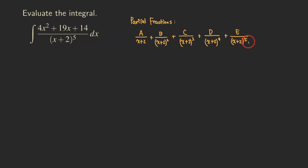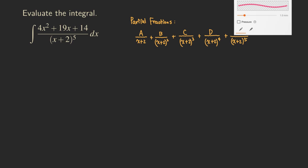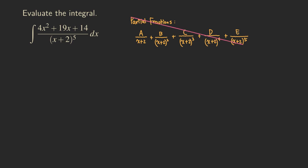We can rewrite this rational function as the sum of all those fractions. But it's going to be a lot of work, because if you try to get the common denominator, you're going to multiply the first fraction by (x+2) to the fourth, the next by (x+2) to the third, and so on. So instead of doing it that way, we're not going to do this.